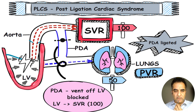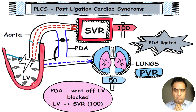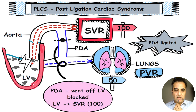Now when your PDA is surgically ligated, suddenly this vent of pressure to the volume-dilated LV is cut off and blocked. Your LV, which was being exposed to 75 of the pressure because of the bypass through this PDA, is now suddenly exposed to the higher SVR after ligation. Hence your LV, which is volume dilated, suddenly needs to work more and becomes dysfunctional.